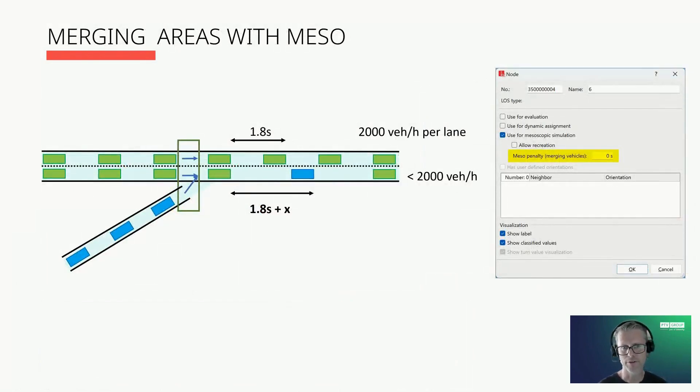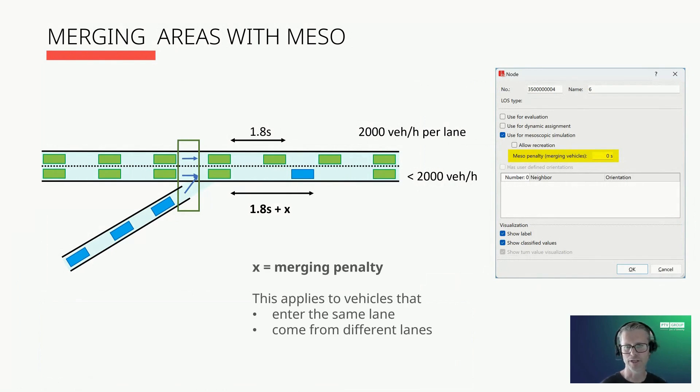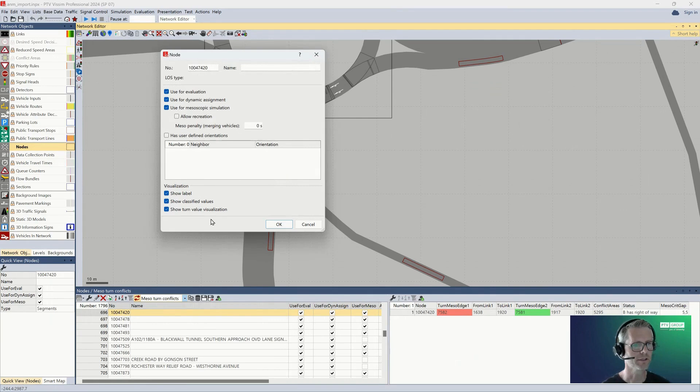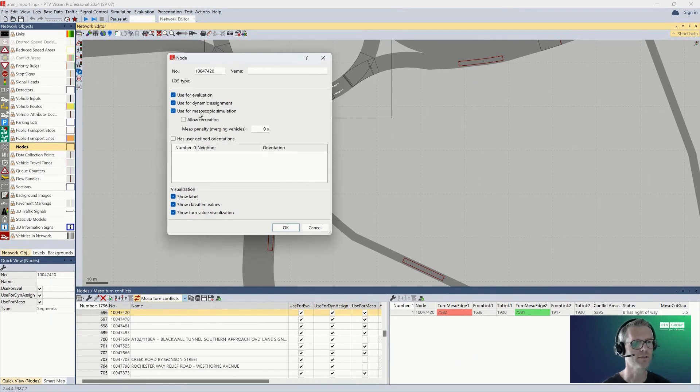For merging or weaving areas, you can set a merging penalty, which is a meso node attribute. The value in seconds is added to the minimum meso gap between two consecutive vehicles on the same exit line if they come from different entry lines or entry links. This can be used to calibrate the loss of capacity at weaving sections. Let me show you that quickly in VISSIM. If you select one node, double-click it to open the dialog for the node. If it's used for mesoscopic simulation, so if this option is active, then you can also enter the meso penalty here in this dialog.